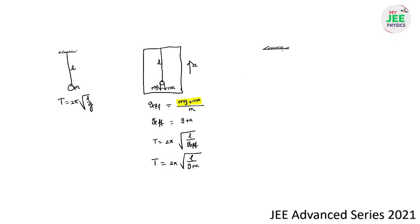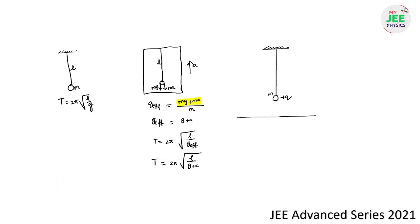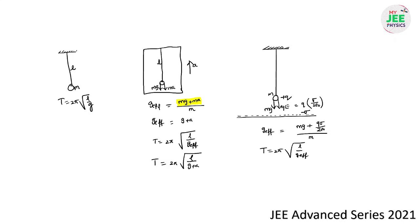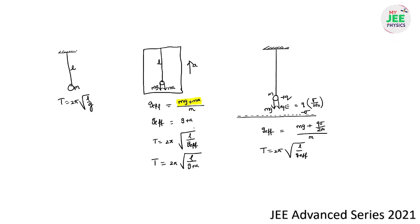Now consider a pendulum with charge +q and mass m placed above a plate carrying charge −σ. The electric force qE acts downward, where E = σ/(2ε₀) for an infinitely long plate. So the net downward force is mg + qσ/(2ε₀), giving g_effective = g + qσ/(2mε₀), and the time period can be calculated as T = 2π√(l/g_effective).